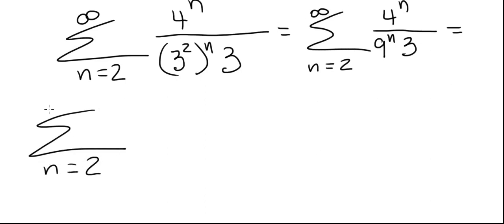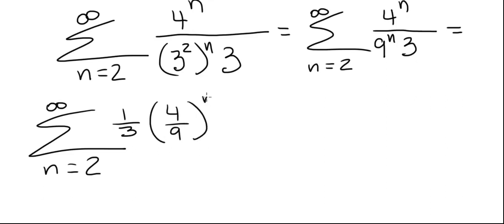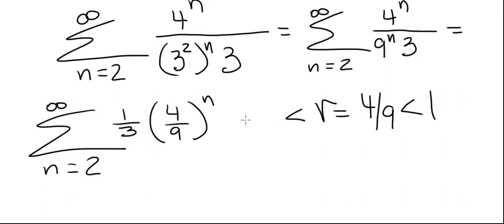This is from 2 to infinity of 1 over 3 times 4 over 9 to the n. So this is a geometric series with r equal to 4 over 9. Since r is less than 1 and greater than minus 1, this series will converge.